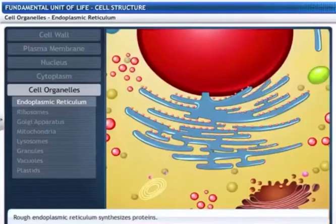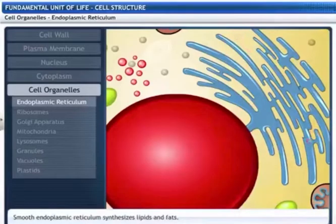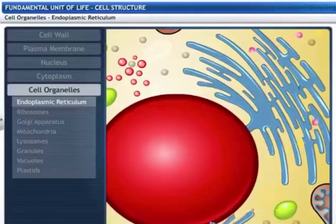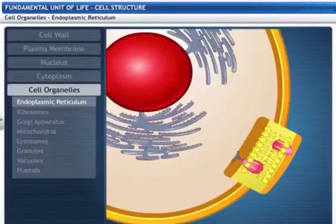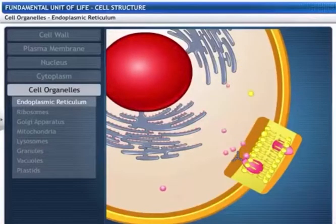Rough endoplasmic reticulum synthesizes proteins, while smooth endoplasmic reticulum synthesizes lipids and fats. Some of these proteins and lipids help in building the cell membrane, and some function as enzymes and hormones.